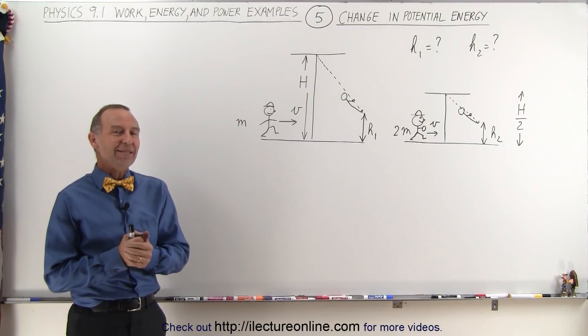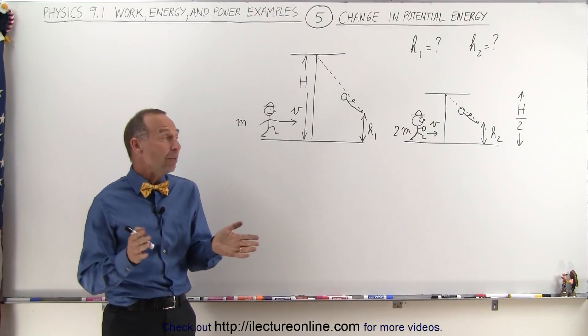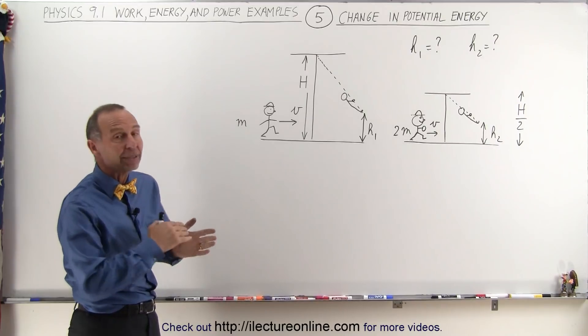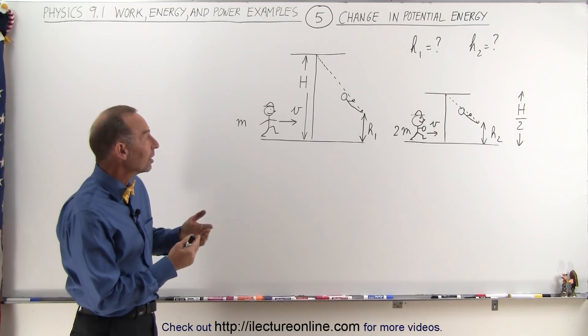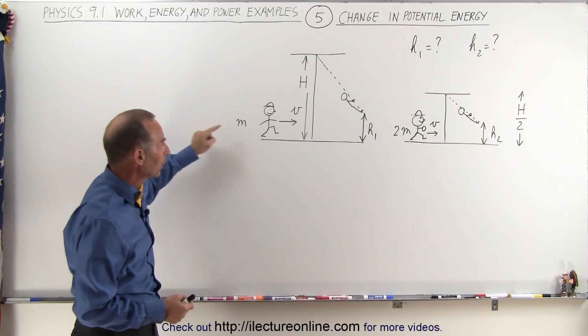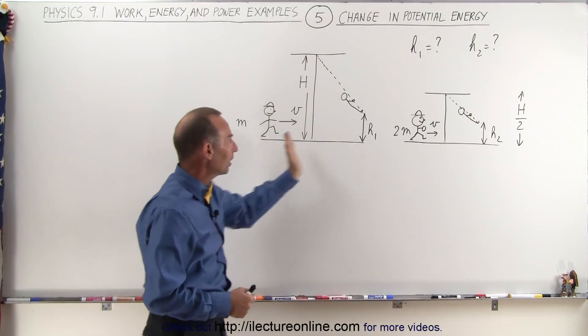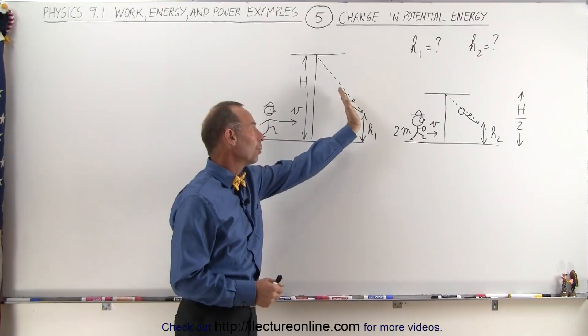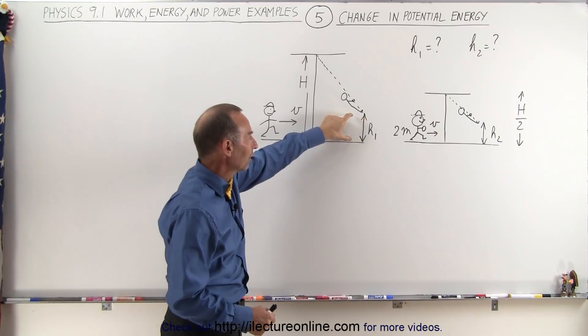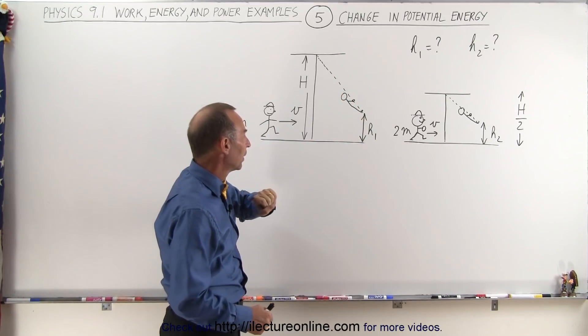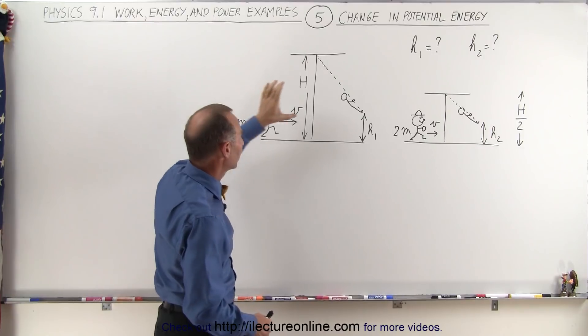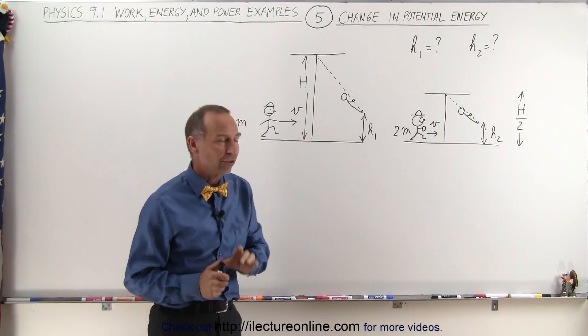Welcome to my lecture online. Here we have an interesting problem dealing with kinetic and potential energy. Essentially we have a runner that's running towards a rope hanging from the ceiling, grabs the rope, swings up, and of course will come to a momentary stop after the runner has reached h1. So the kinetic energy of the runner has been transformed into potential energy.